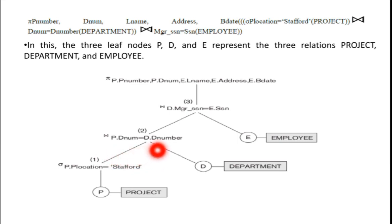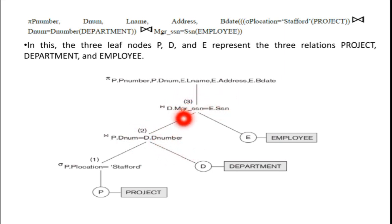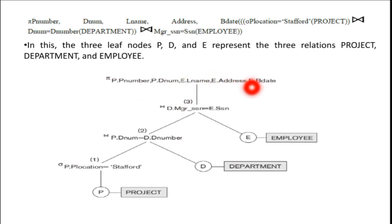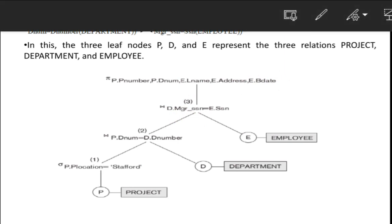Next, it will join the particular employee of that project location by comparing the department number from the department table. Then it will select the manager of that particular department where the project location is Stafford, and join that result as well. Lastly, it will display all the information — project number, department number, employee name, and address — as the final result at the root node.